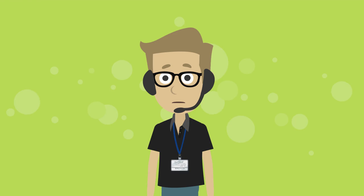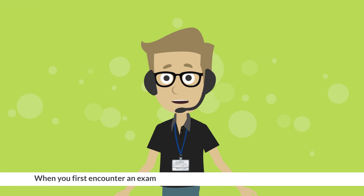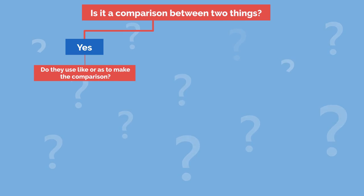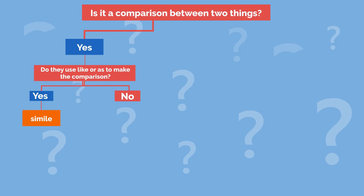When you first encounter an example of figurative language, you should ask yourself: is it a comparison between two things? If it is a comparison between two things, you should ask yourself this follow-up question: do they use like or as to make the comparison? If they do, you know that it's a simile. If they do not, you know that it's a metaphor.